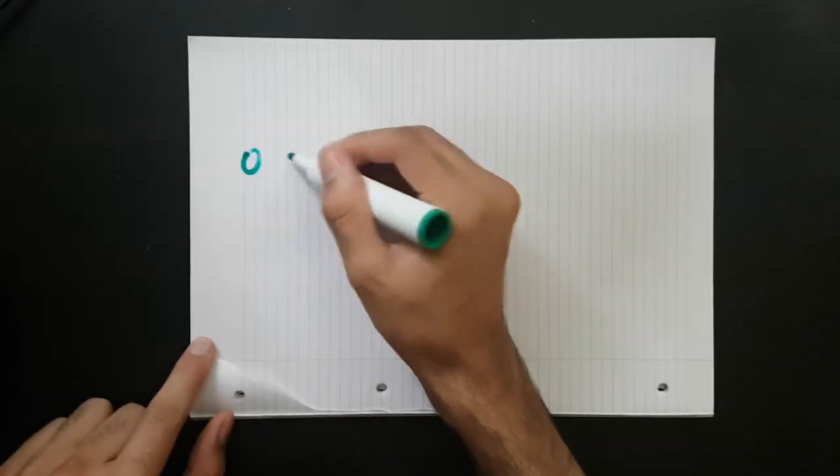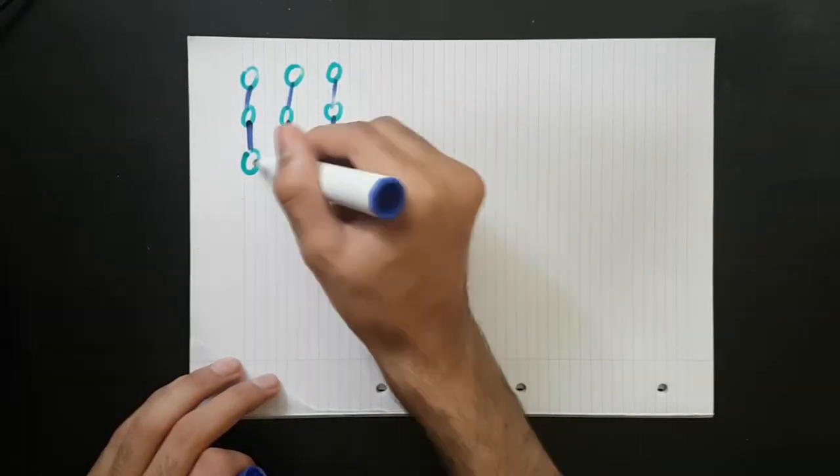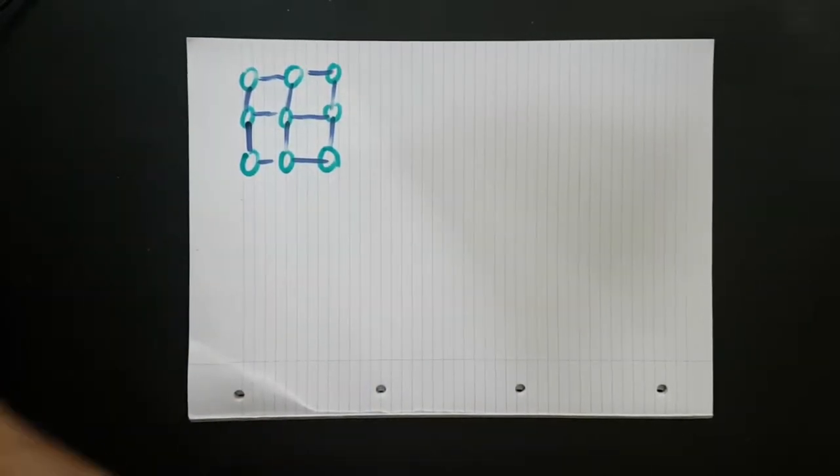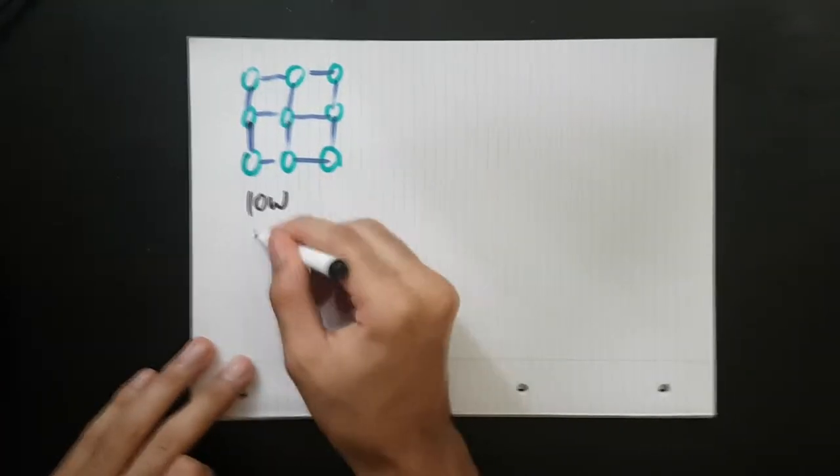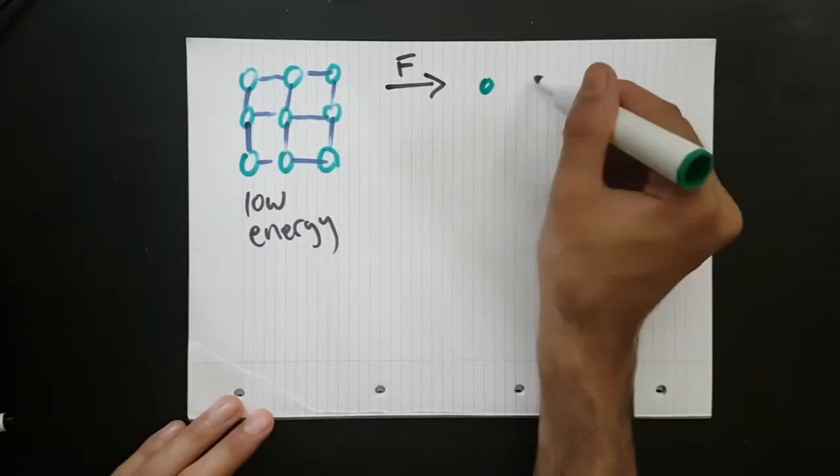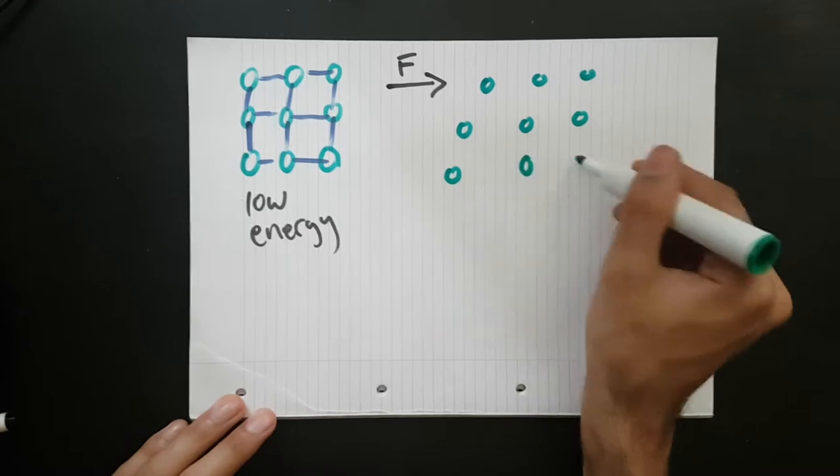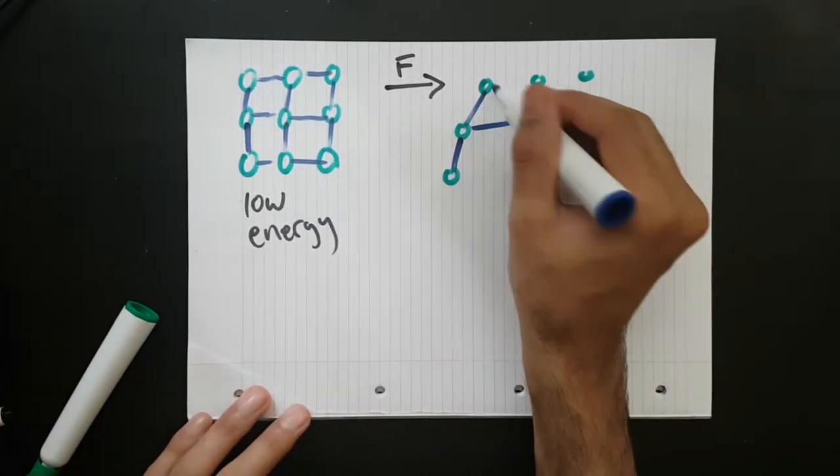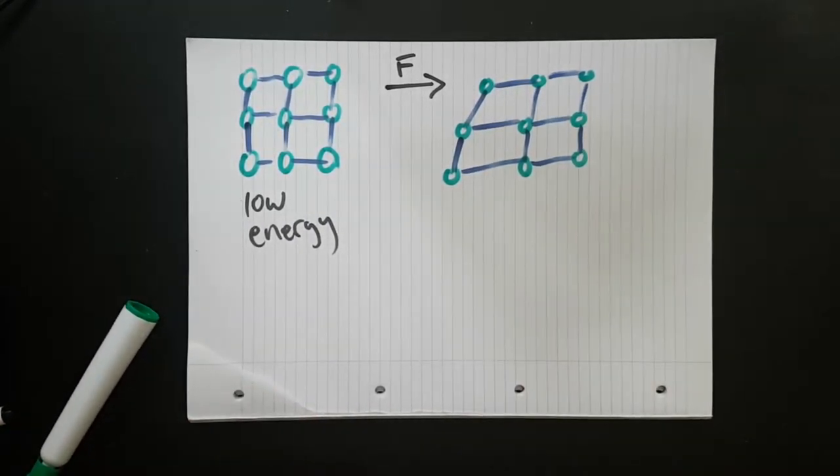The physical reasons for elastic behavior can be quite different for different materials. In metals, atoms are held together in an atomic lattice. Initially, this is at a low energy state. When forces are applied, energy is added into the system and these forces cause a deformation.